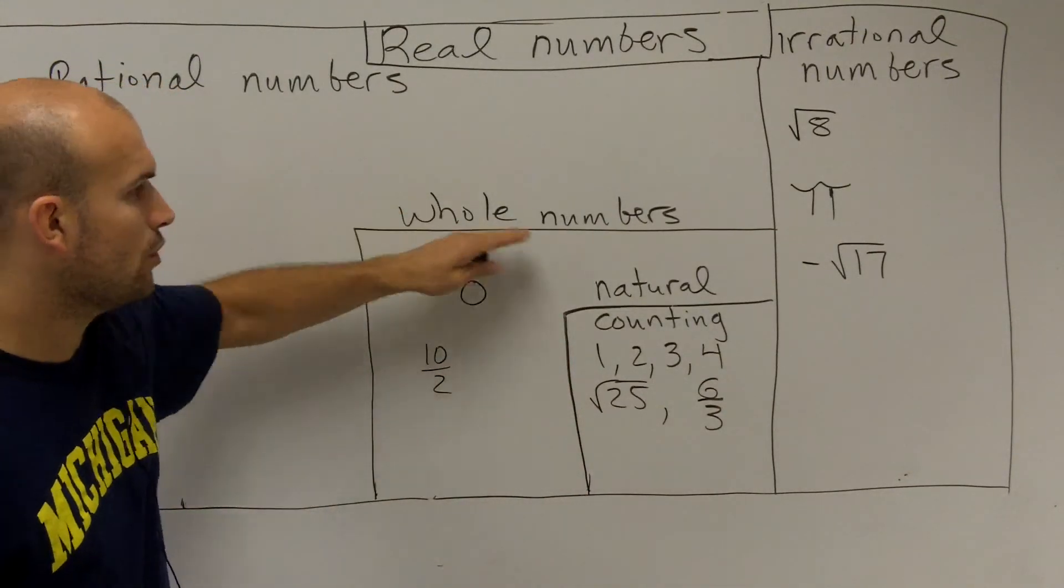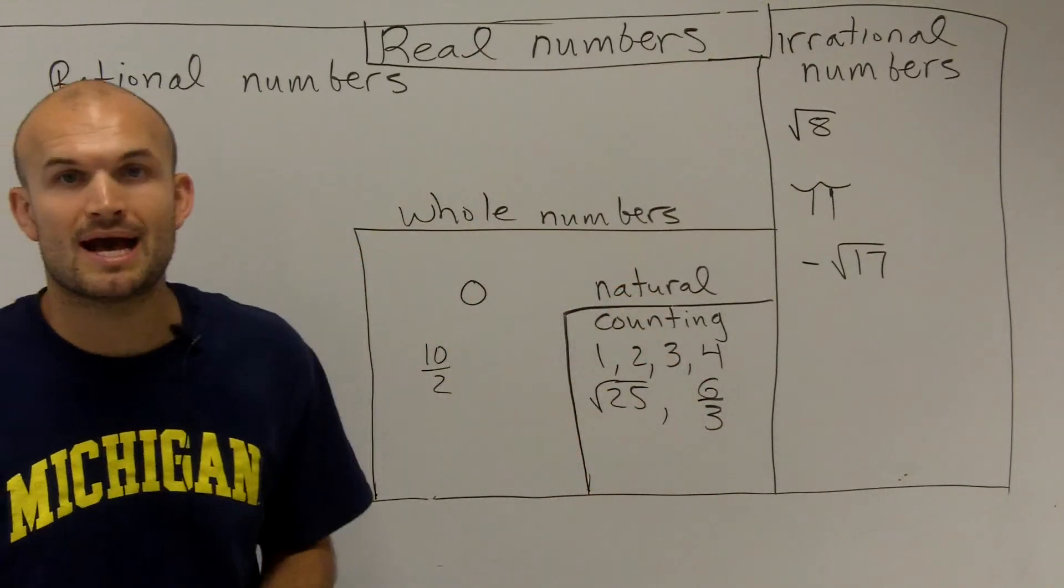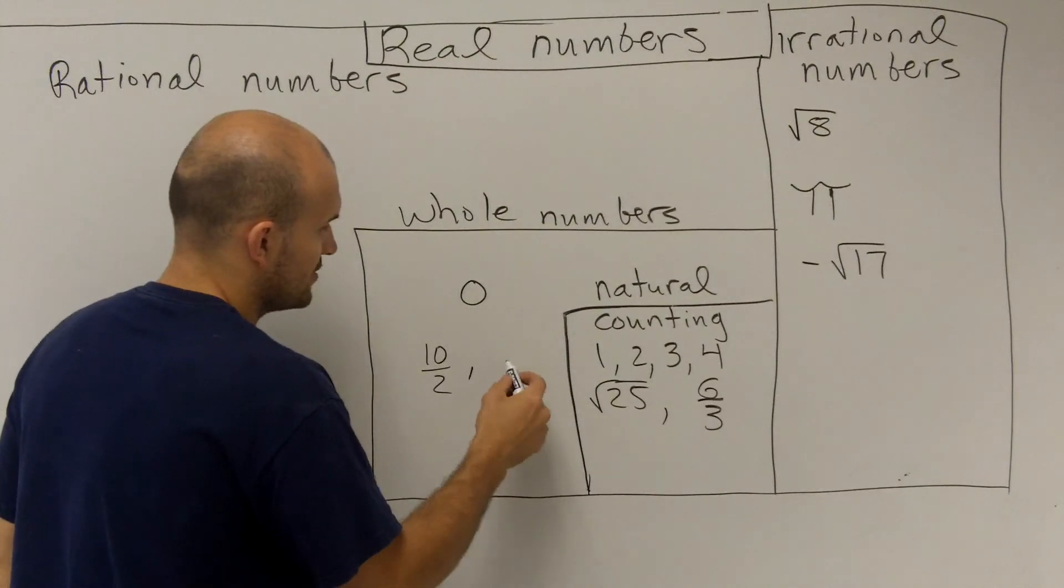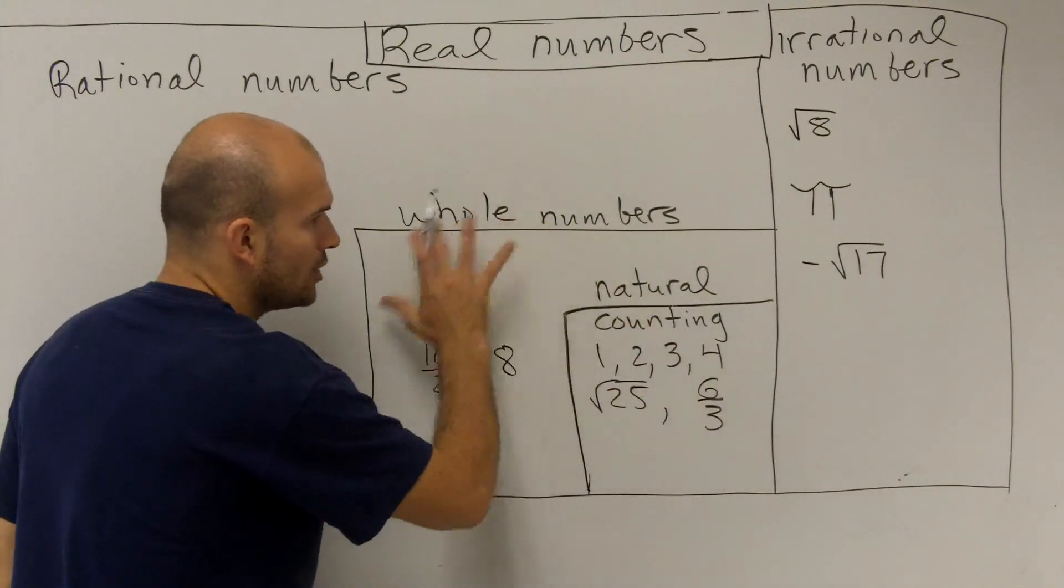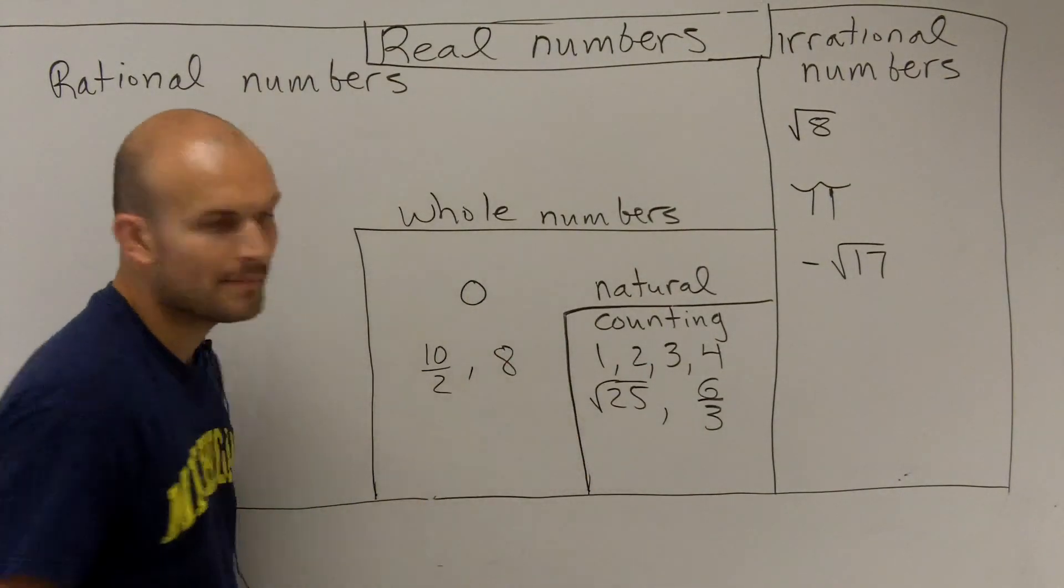So zero, so whole numbers is going to include all counting numbers. Now we're going to add in zero as well. And also whole numbers, you could do like eight and all the rest of these are all included as whole numbers. Alright, and there you go.